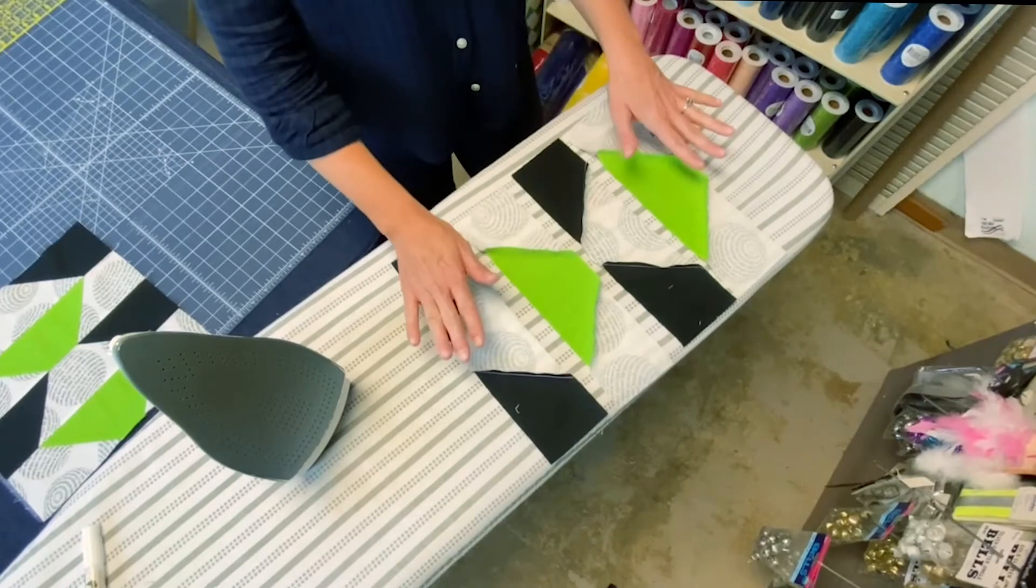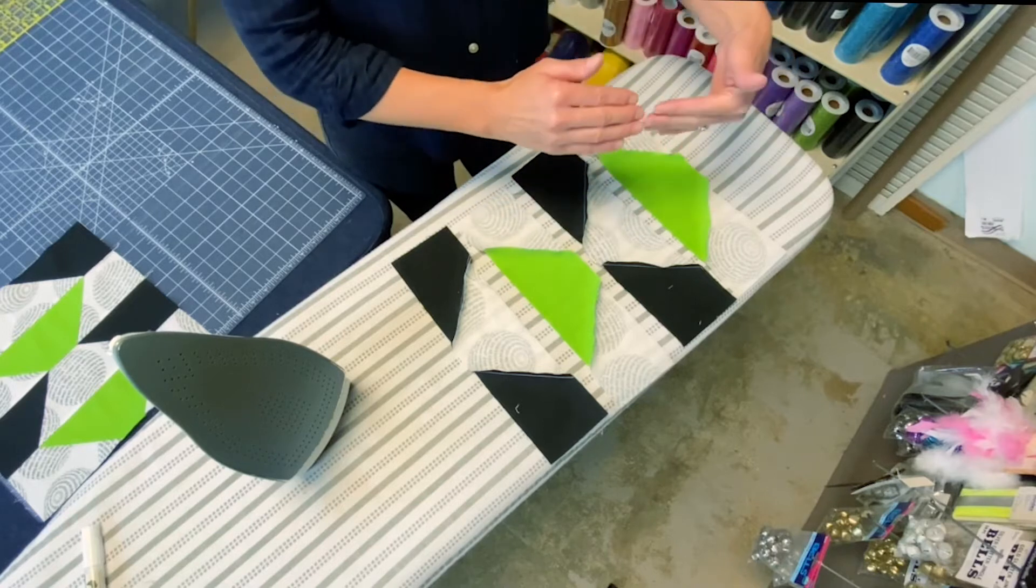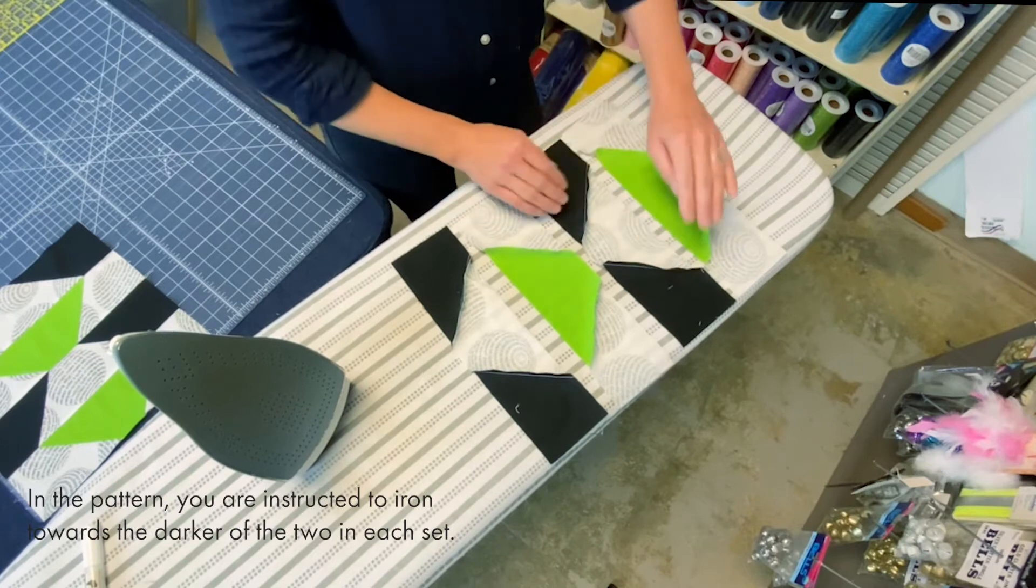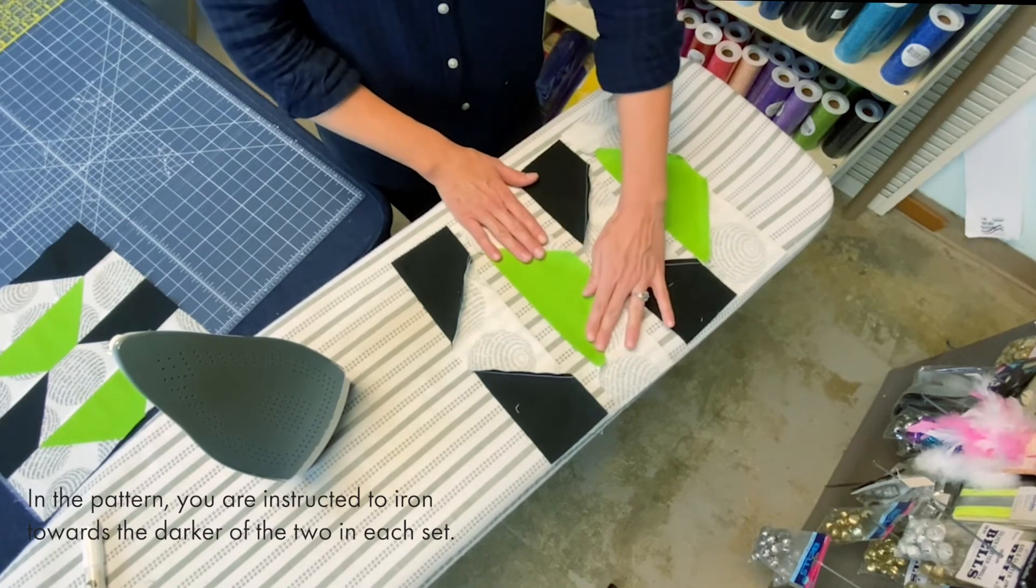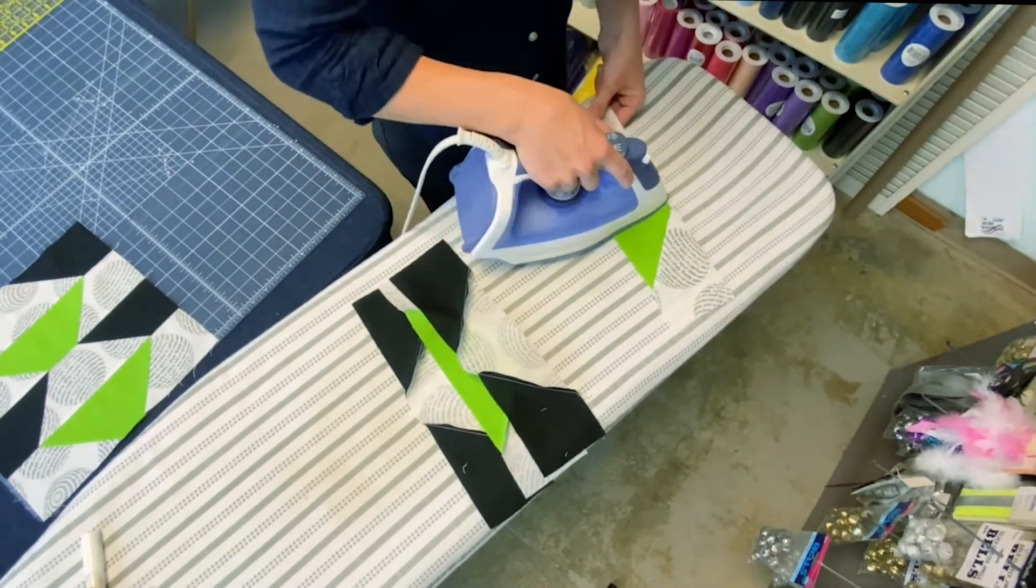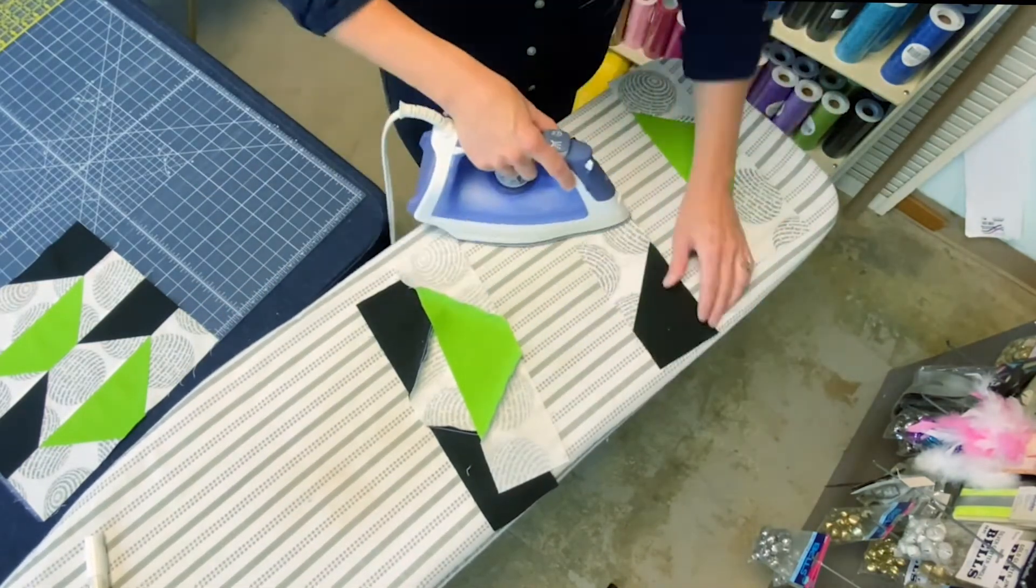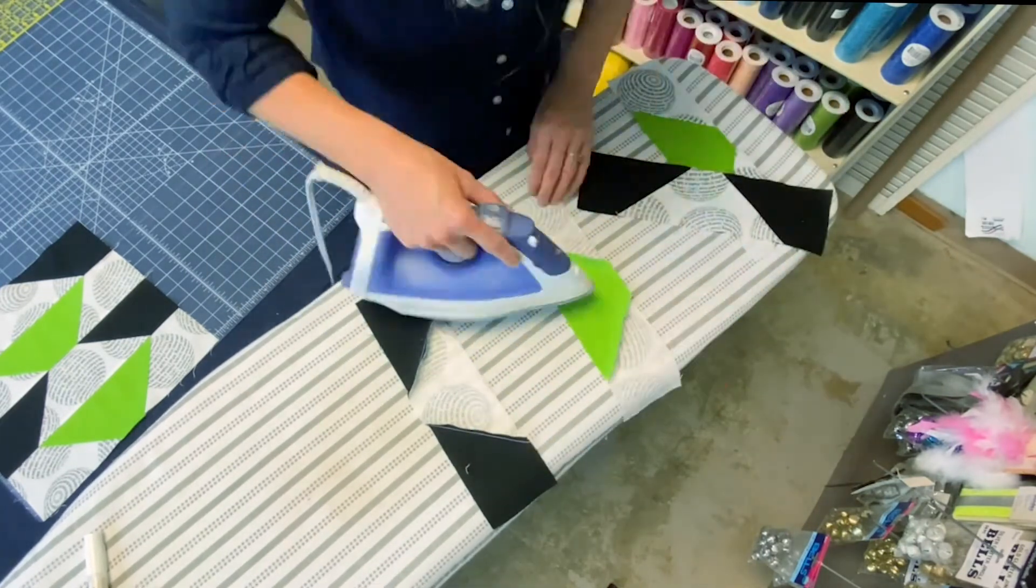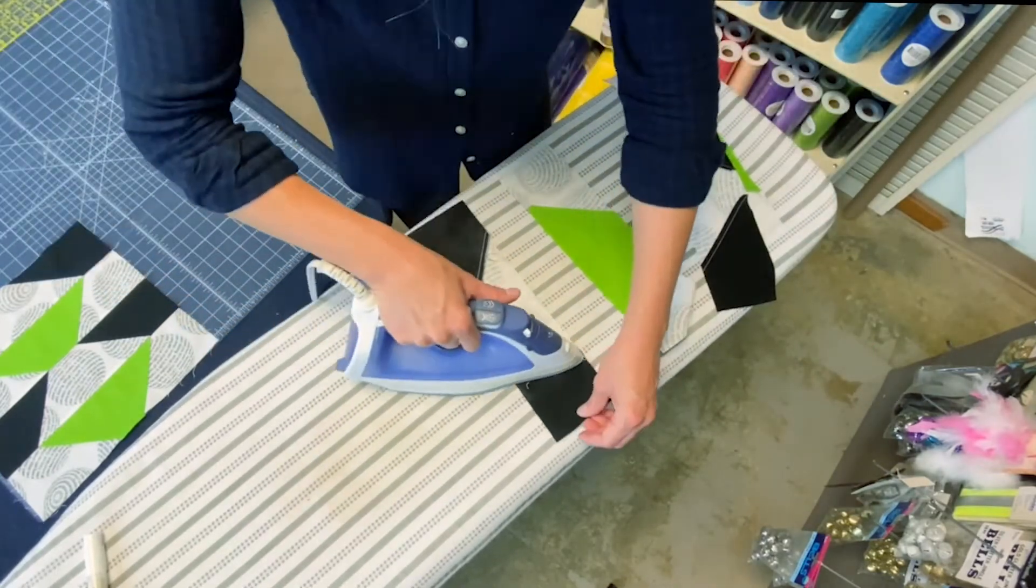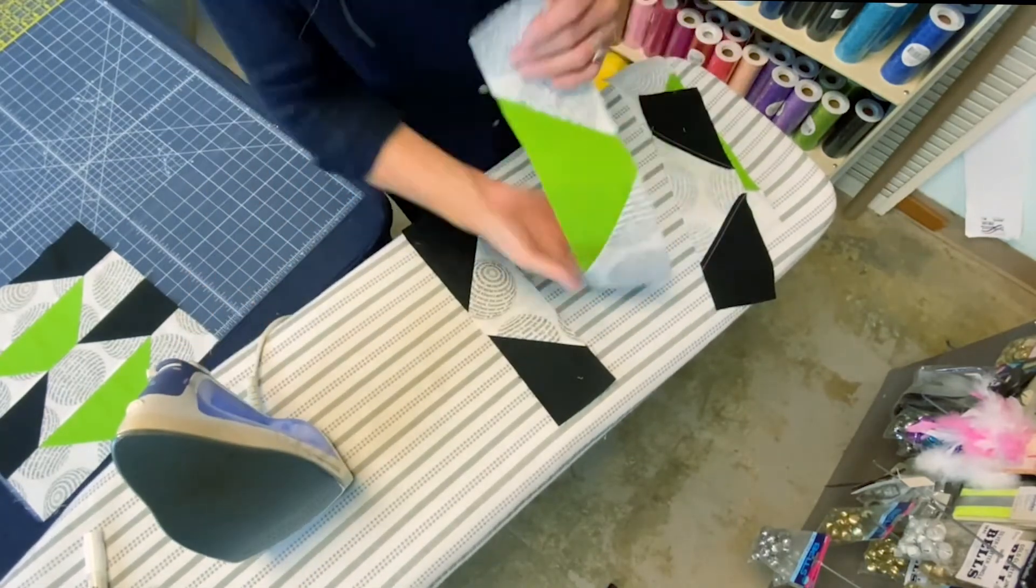So when we go to put them together we want these to go opposite of each other so that when we sandwich them we have a nice happy seam where one goes one way one goes the other. So on my greens I'm going to press them out, on my black and whites I'm going to press in. So green out, black white and get to press. All right now we have our pieces.